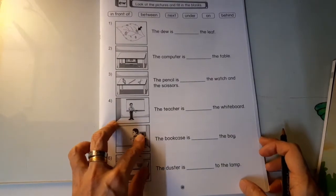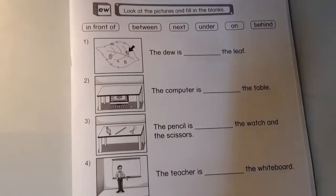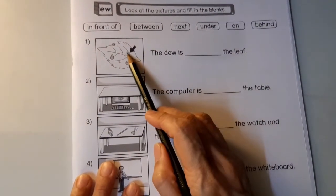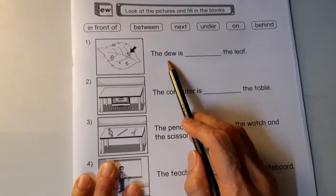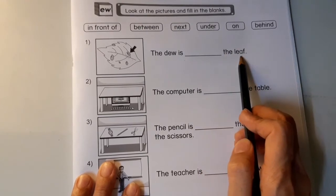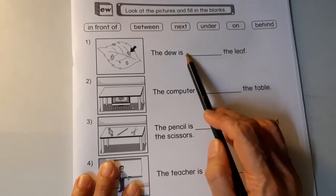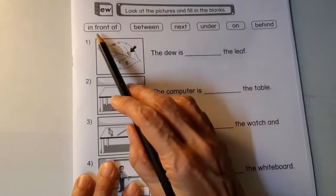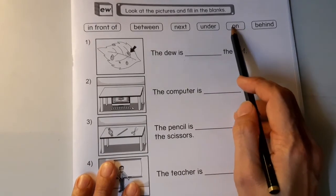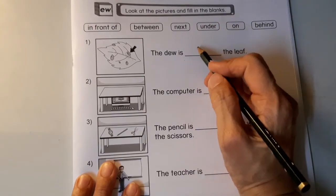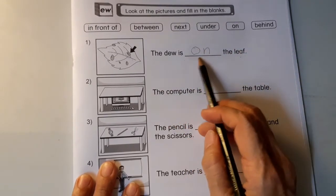Let's go through this together. Where is the dew again? It's on the leaf. Let's read: the dew is on the leaf. So the missing word here is 'on'. Can you find the word 'on'? Here it is. On. O-N. The dew is on the leaf.